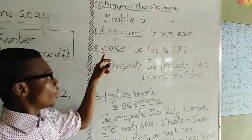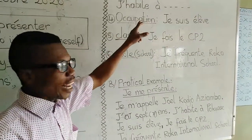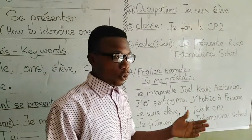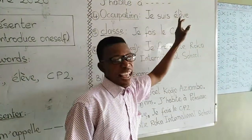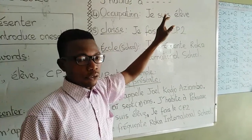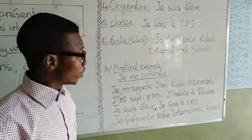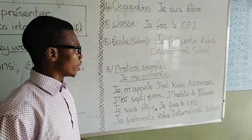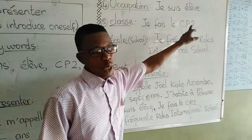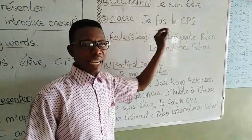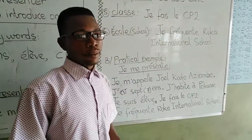The next one is to tell the person your occupation — what you do in life. You are students, you are learners. So in French, you say je suis élève. The next point is your class — what class are you in? Je fais le CP2, meaning I am in class 2.